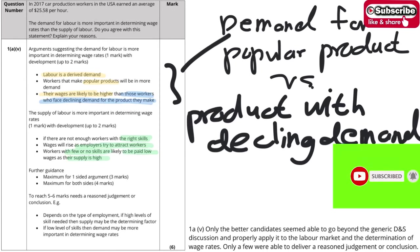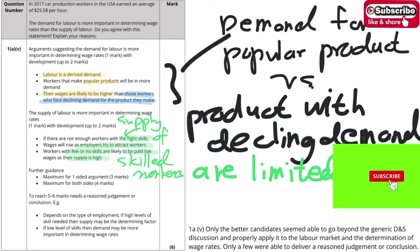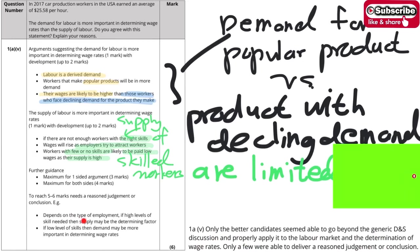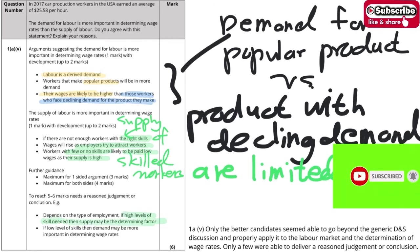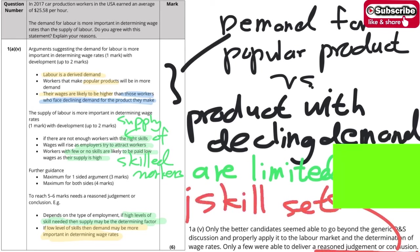Workers who lack skills are likely to be paid low, as the supply of unskilled workers is high. For the reasoned judgment, the conclusion depends on the type of employment. If a high level of skill is required, supply will be the determining factor. If there is no skill required, then demand will be more important. So the conclusion is that the skill set determines which factor — demand or supply — is more important in wage determination.